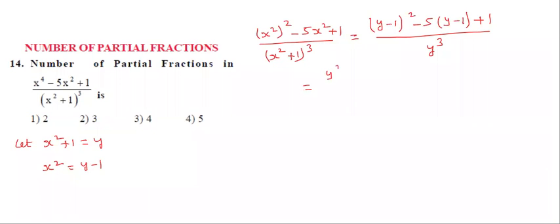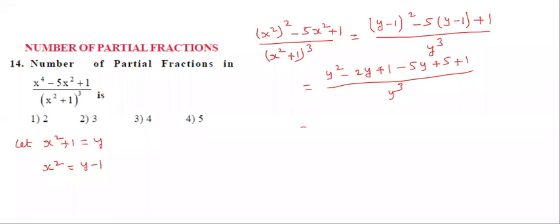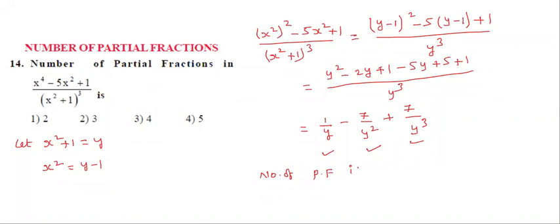Expanding the numerator: y² minus 2y plus 1, minus 5y plus 5, plus 1 — all divided by y cubed. The highest degree in the numerator is 2 only, so we have y² divided by y³, giving 1/y, minus 7y divided by y³ giving minus 7/y². So the number of partial fractions is only 3. The second option is correct.